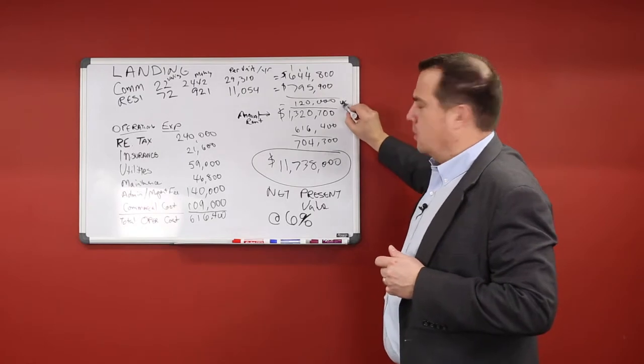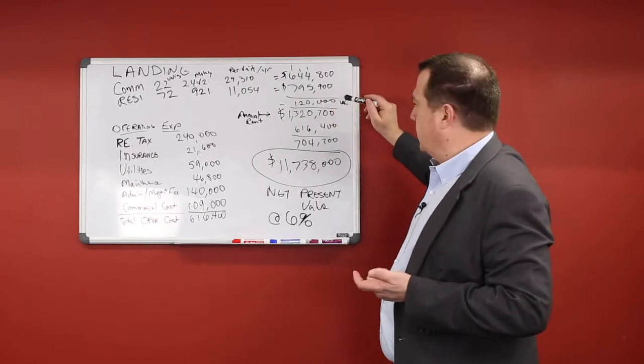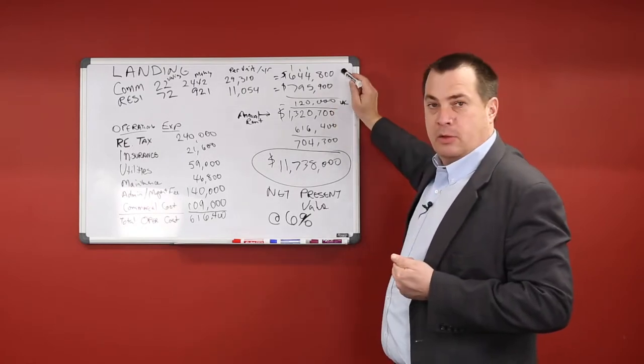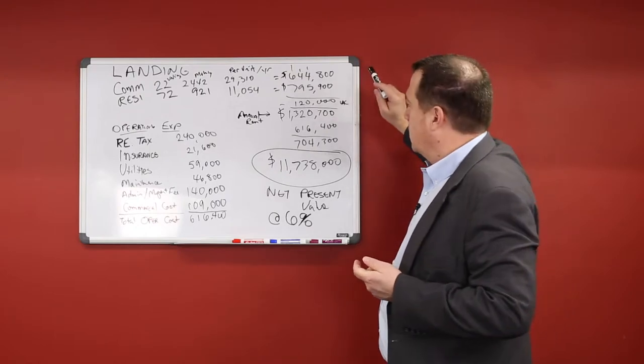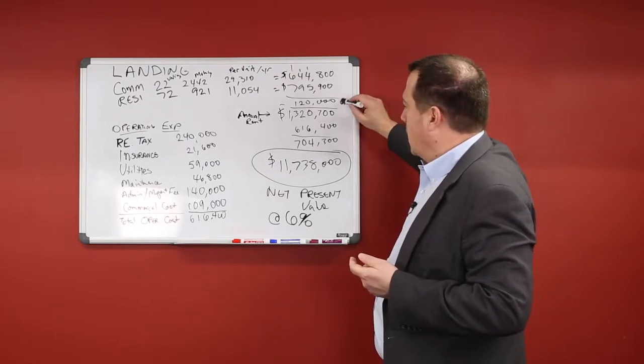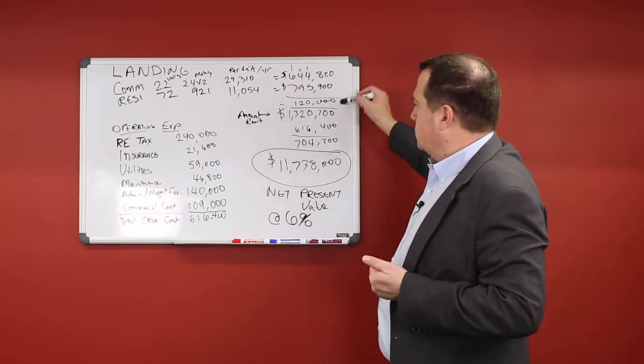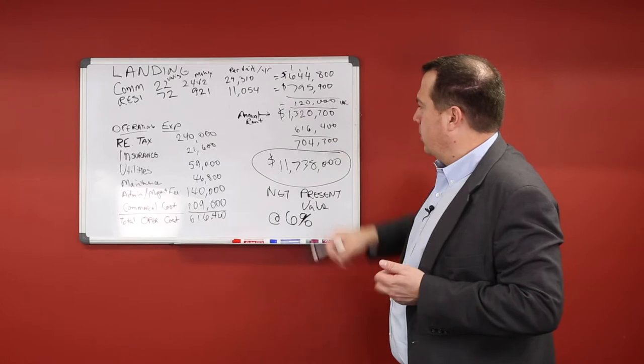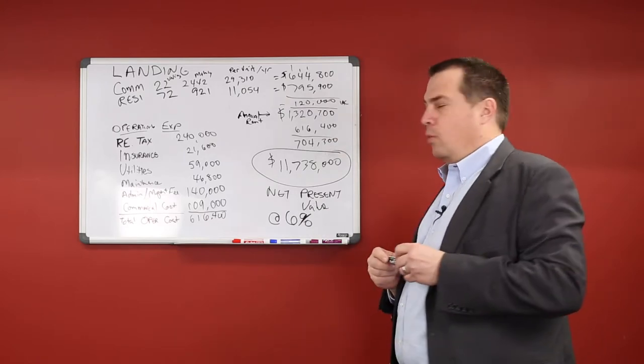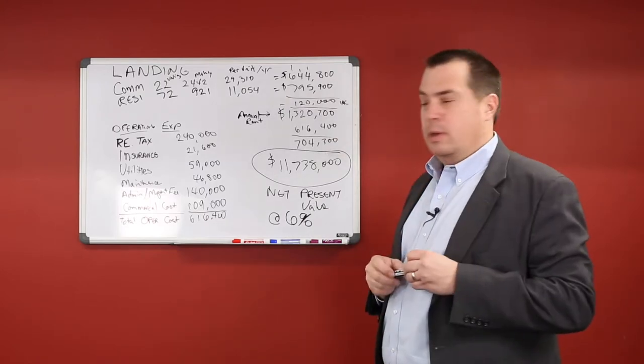less the expected vacancies, which I think they were expecting 7% vacancy on the commercial and 10% vacancy on the residential. The number that they gave was about $120,000, subtract that from those two, and you come up with annual rents of $1.32 million.